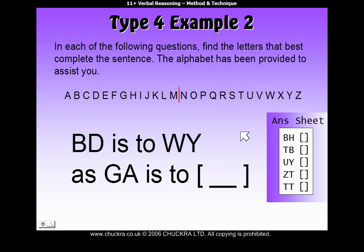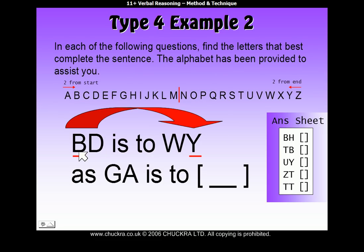Let me explain another method they sometimes use in this type of question. I've drawn a red line which splits the alphabet into two equal parts, with the middle two letters being M and N. Now, B is the second letter from the start of the alphabet, and Y is the second letter from the end. Notice here that we're looking at how the first letter of the first pair relates to the second letter of the second pair.